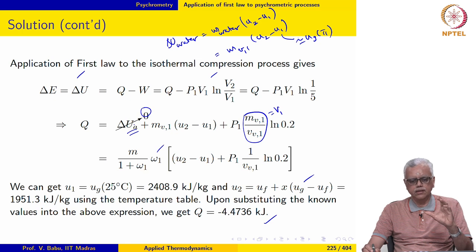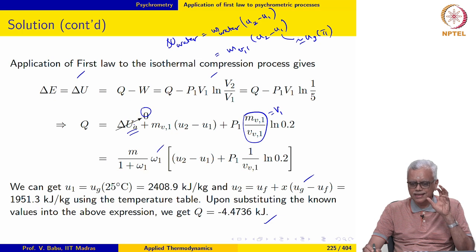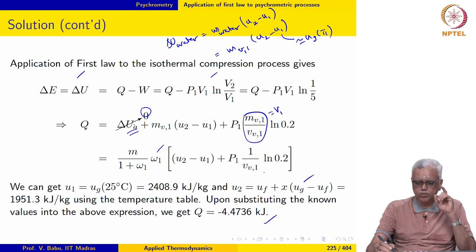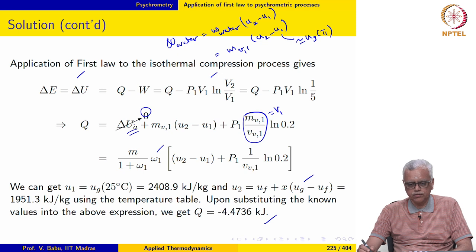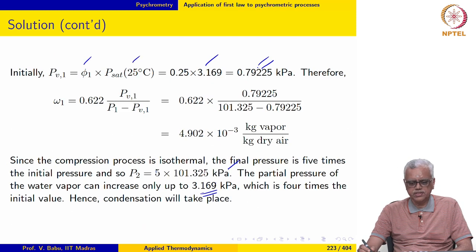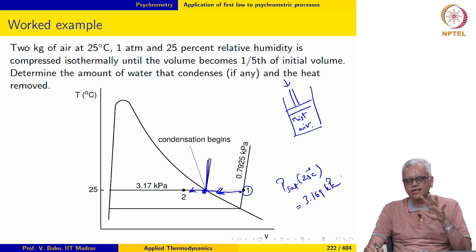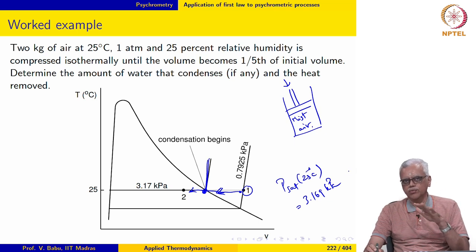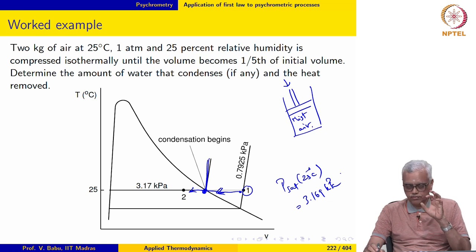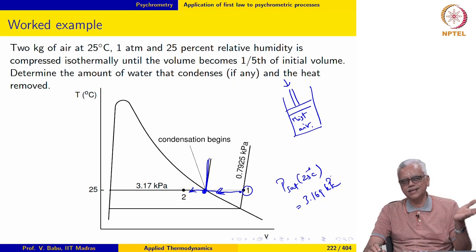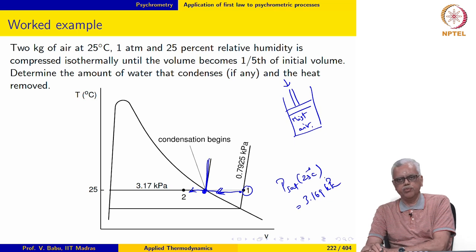This illustrates how the first law is applied to a psychrometric process. When condensation does not take place, mass of individual components remains the same and the calculation is relatively straightforward. When phase change of the water occurs, we must track the amount of water that condenses and the amount that remains in the vapour phase.